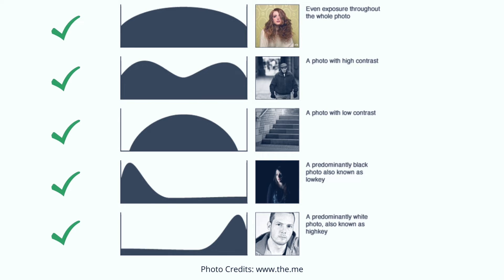For a photographer who wants to nail exposure every single time, histogram reading is key. When I go out for a street shoot, the images I want to create usually have edge-to-edge even exposure, meaning the histogram should somewhat resemble a bell curve — especially for images captured during daytime. There's a great article by Theme Photography Daily linked in the description below if you want to learn more about histograms and exposure.